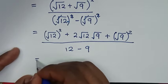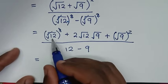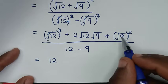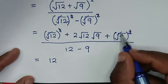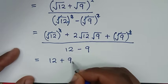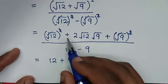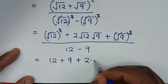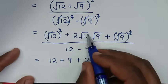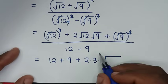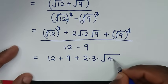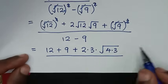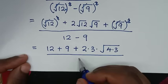In the numerator, (square root of 12) squared is 12, and (square root of 9) squared is 9. For the middle term, square root of 9 is 3, so it becomes 2 times 3 times square root of 12. Since 12 equals 4 times 3, square root of 12 equals 2 times square root of 3. The denominator simplifies: 12 minus 9 equals 3.